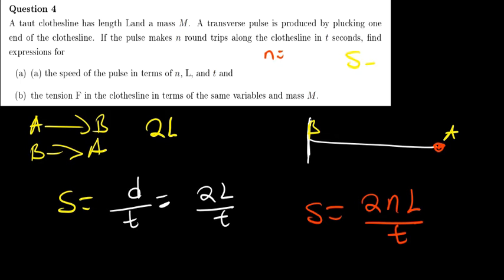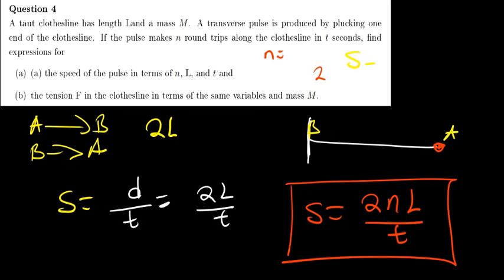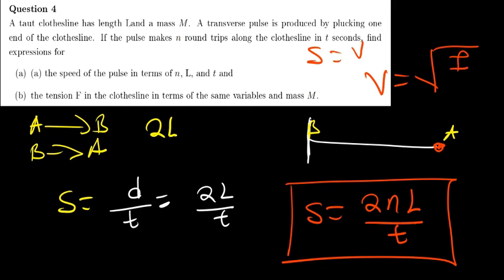The speed will be given by 2NL divided by T. The time it takes to complete the number of round trips is T, and N is the number of round trips. If they give you, say, 2 round trips, then N equals 2. So the formula for the speed is v = 2NL/T. Now the second part requires us to find the tension.